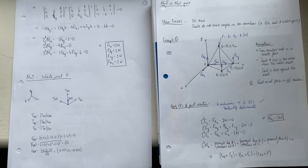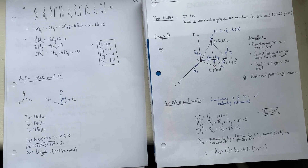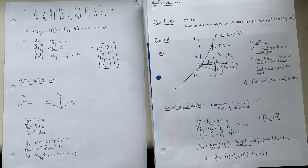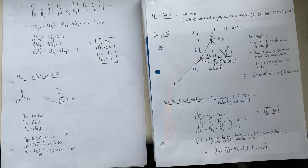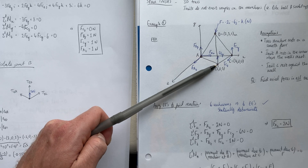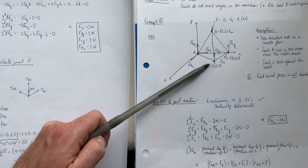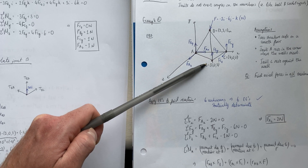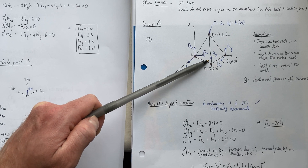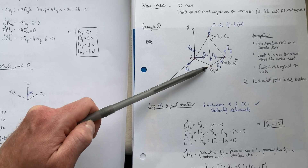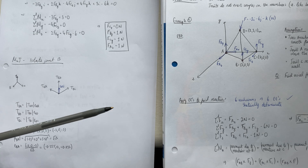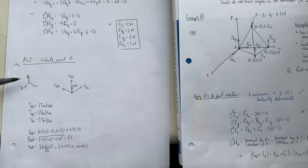Now we have to solve for the axial forces in the members of the truss. We use a technique called the method of joints, which we've seen for 2D applications, but this time we consider it in 3D. The first thing we do is isolate joint B, because we will have the fewest unknowns there: an unknown axial force in member BA, an unknown in member BD, and an unknown in member BC. We also have the known reaction force F_By. So we have three unknowns and can write three equilibrium equations in 3D.